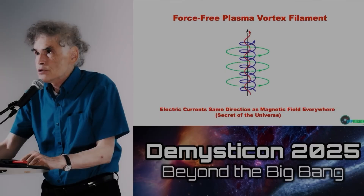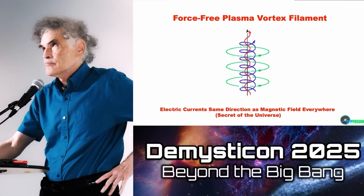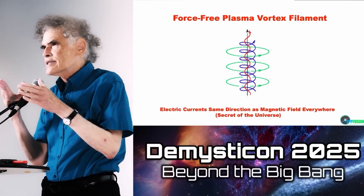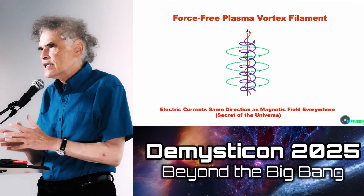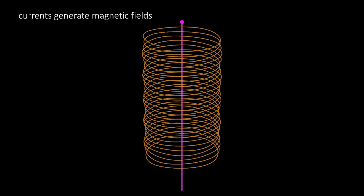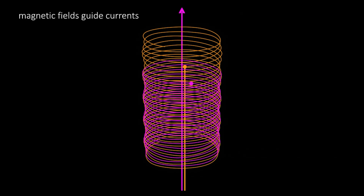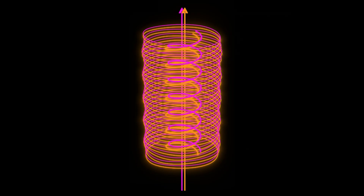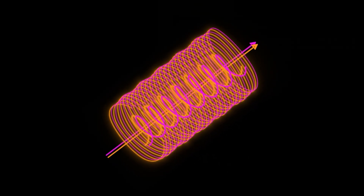What Alfvén and Fälthammar discovered over 60 years ago is that a basic organizing structure in the universe is force-free plasma vortex filaments. In these, the currents along the outside are almost circular and produce fields along the inside which are straight lines. The currents running along those interior fields produce the fields on the outside that those currents run around, and in between the currents run in helixes. This has been seen millions of times in laboratories and in the cosmos.